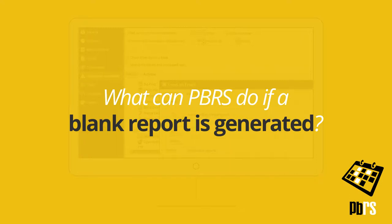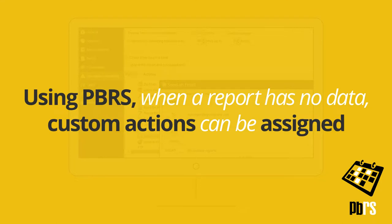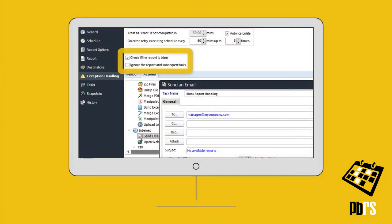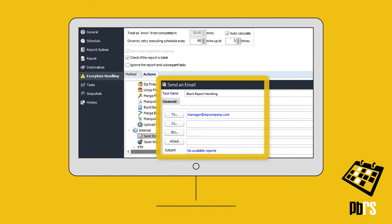What can PBRS do if a blank report is generated? Using PBRS when a report has no data, custom actions can be assigned. In this example, the blank report and its associated tasks won't be ignored, but a notification email will be sent indicating that this report was executed but contained no data.